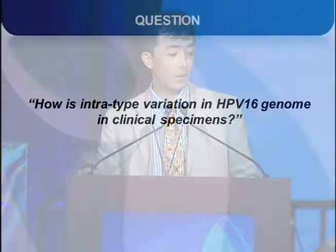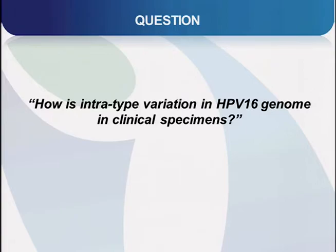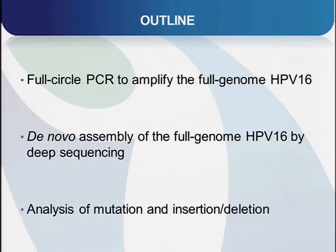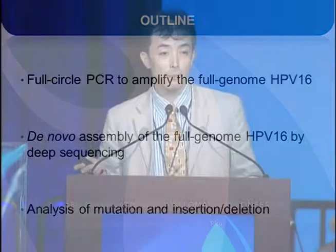So our question is: how is the introtype variation in the HPV-16 genome in clinical specimens? To understand its physiological significance, we need to examine introtype variations in great detail. We have selected deep sequencing technology because we can get more than a million sequence reads and are able to analyze even low-level genetic variations. In my talk, I'll first discuss a novel PCR system to amplify the full genome HPV-16, then explain de novo assembly by deep sequencing, and finally present data on mutation and insertion-deletion in clinical samples.